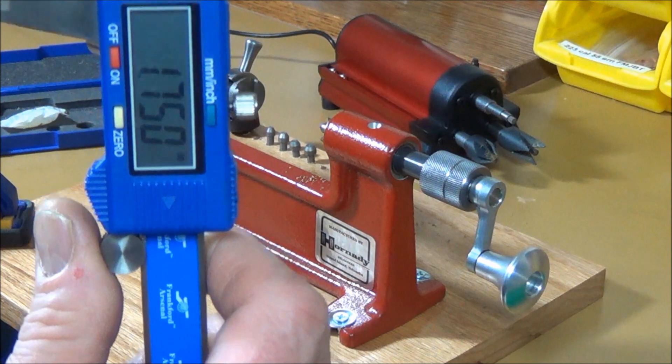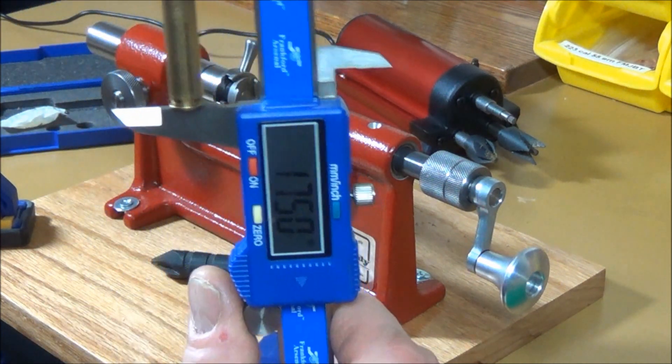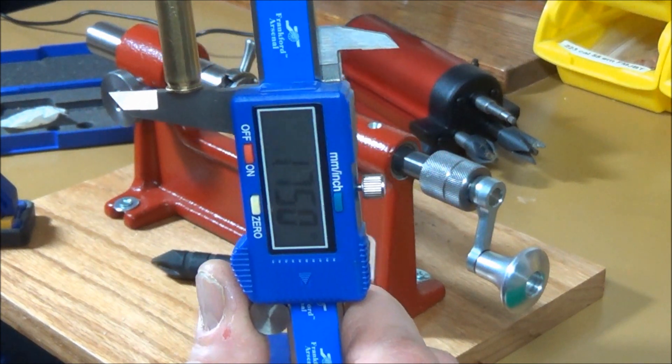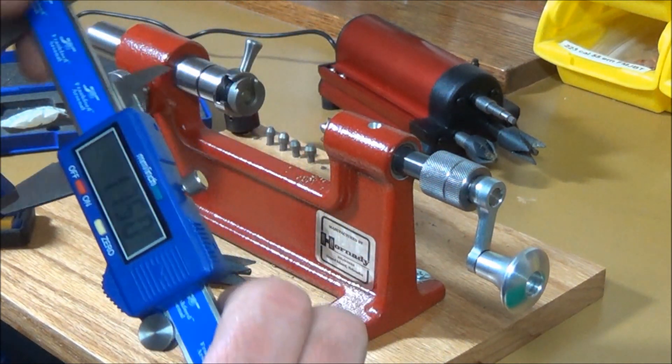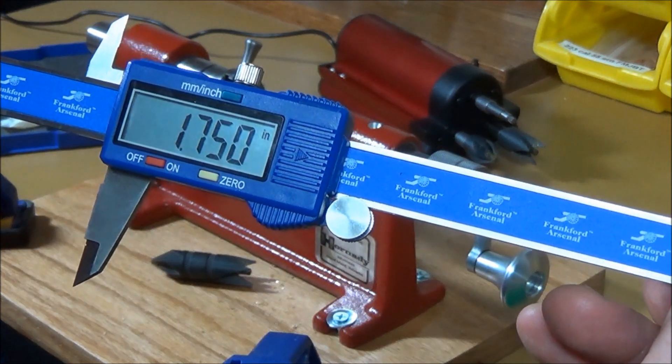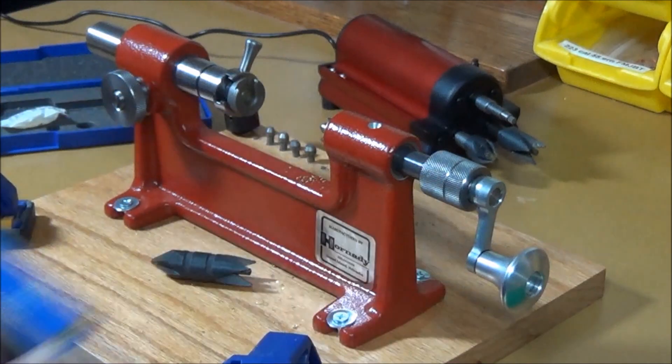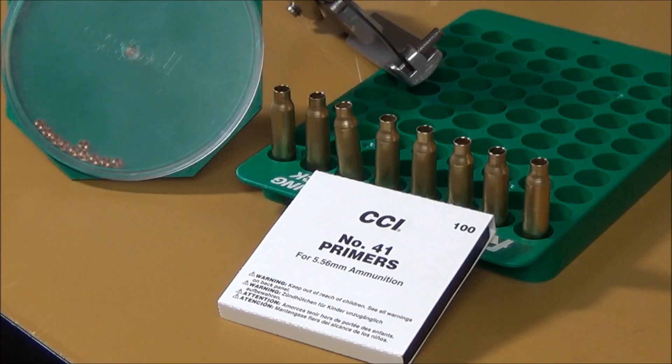Once you get the cases cut, I generally check with micrometers. And as you can see, they're measuring about 1.750. Let's see if we can give you a reading on that a little bit easier. 1.750, right on the money.